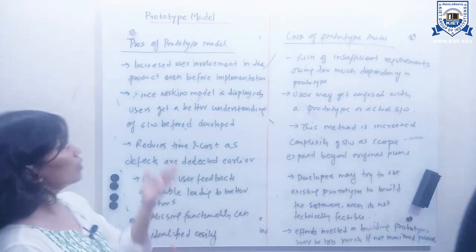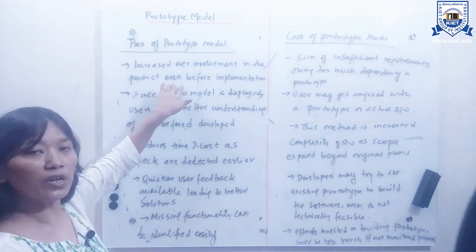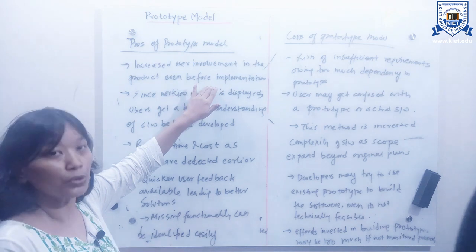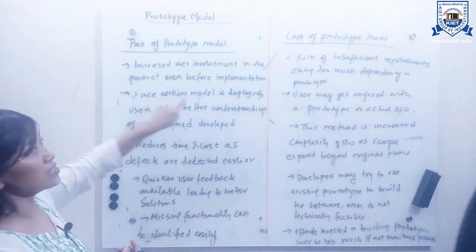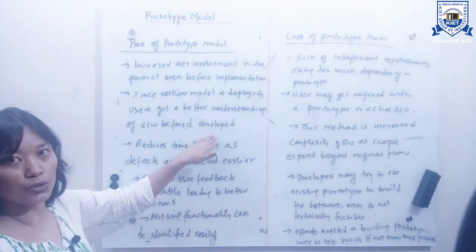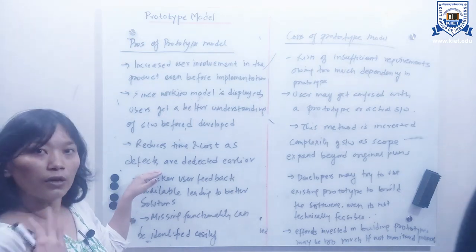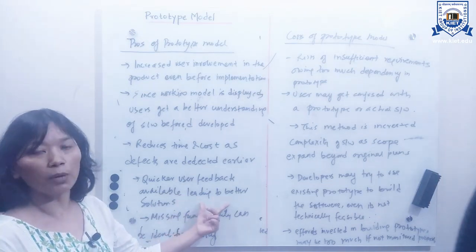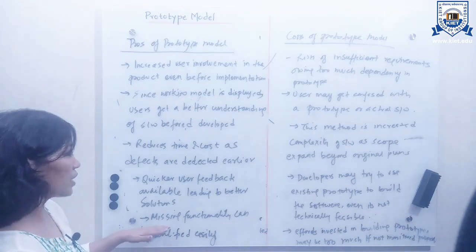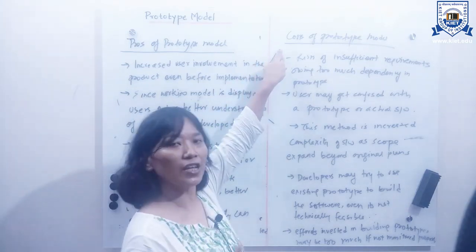Starting with the advantages of the prototype model: first, there is increased user involvement in the product even before implementation, since customers are involved for their suggestions and feedback until the prototype is accepted. Second, since a working model is displayed to the user, there is better understanding of the software before it gets developed. Third, it reduces time and cost as defects are detected earlier in the requirement phases, and quicker user feedback leads to better solutions. Also, missing functionalities can be identified easily.